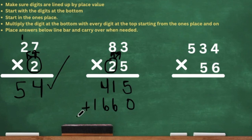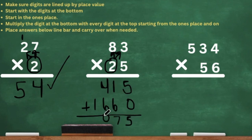We're going to add it all up. Five plus 0 is 5. Then 1 plus 6 is 7. Then 4 plus 6 is 10 — put 0, carry the 1. And then 1 plus 1 is 2. Our final answer is 2,075.